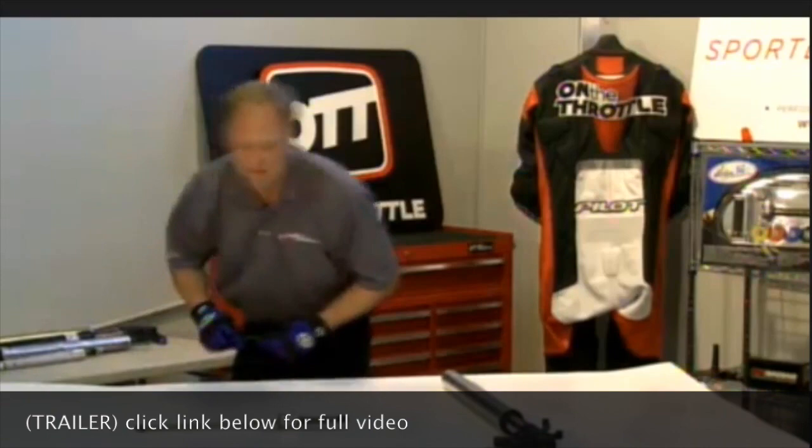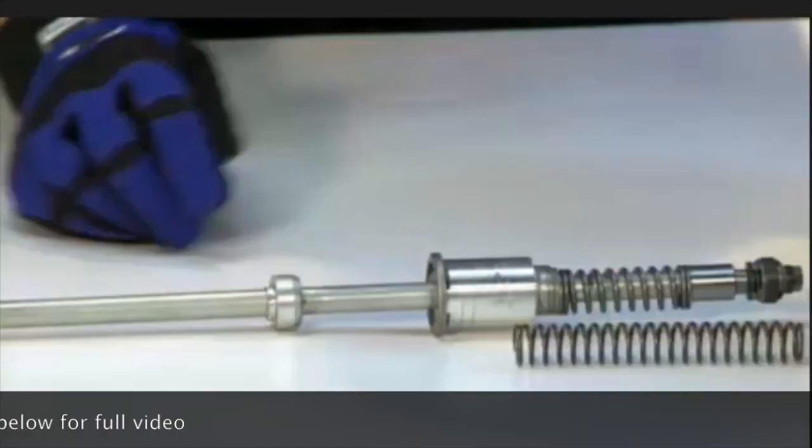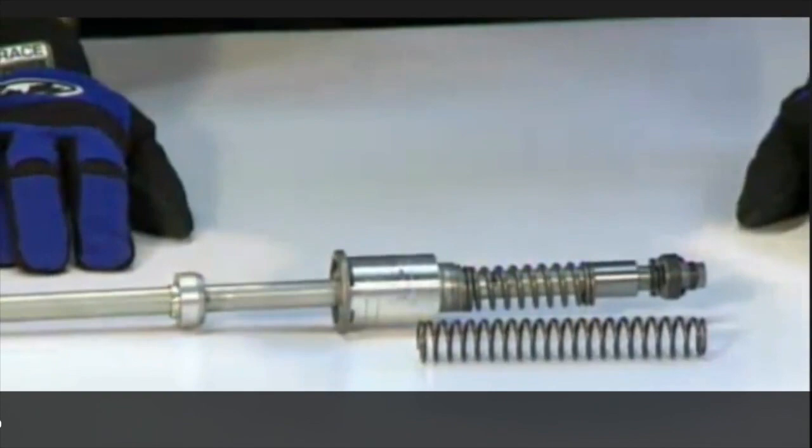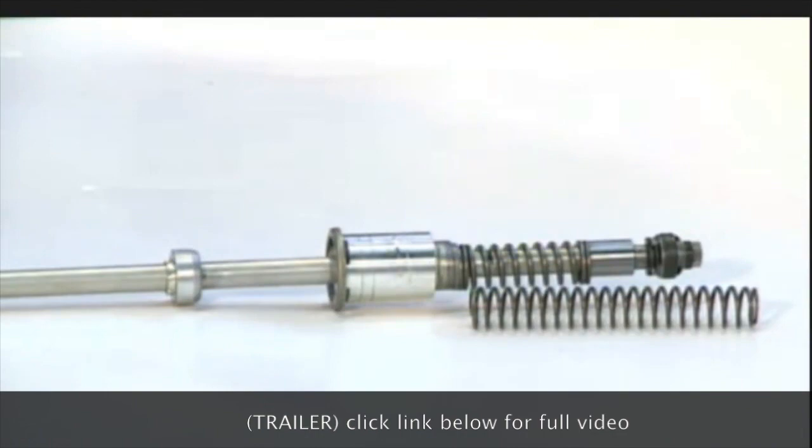Now top out springs come in various different sizes. This, for example, is off an RC-51. So let's place it roughly in line with the one we have. And you can see that it is significantly longer.